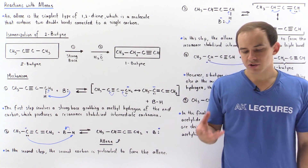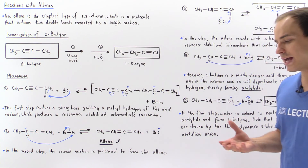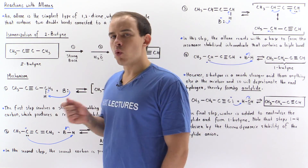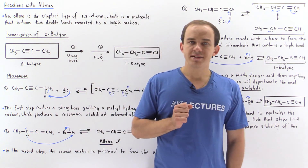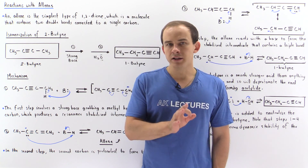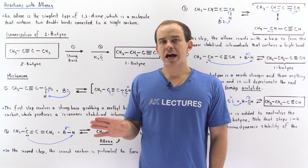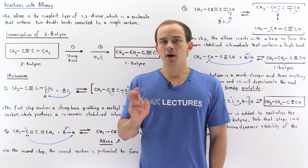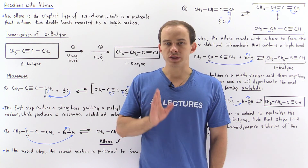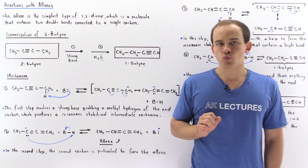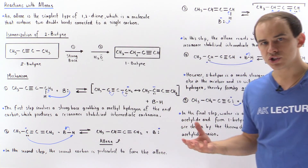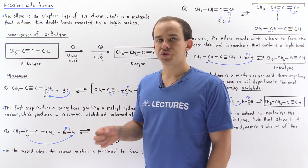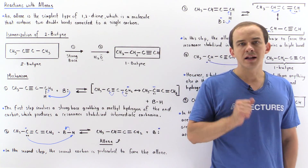Previously, we introduced a category of molecules known as 1,2-dienes. In our lecture on 1,2-dienes, we said that an allene is a general term that refers to a molecule that contains two double bonds connected to a single carbon atom. In this lecture, we're going to discuss the reactions that involve allenes, 1,2-dienes, as intermediate molecules.